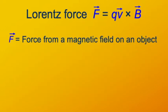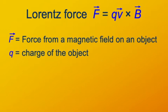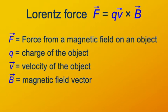So again, this so-called Lorentz force — the force exerted by a magnetic field on an electric charge — is F equals QV cross B, where F is the force from the magnetic field, Q is the charge of the object, V is its velocity, and B is the magnetic field vector.